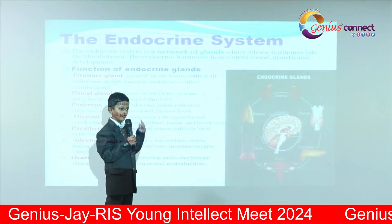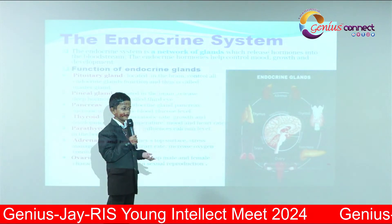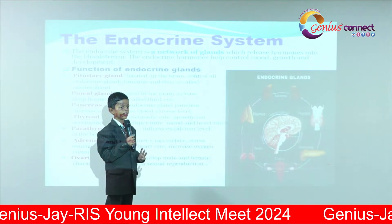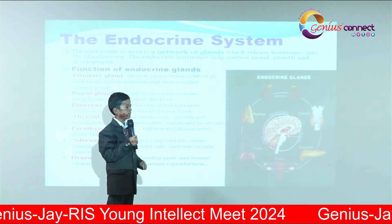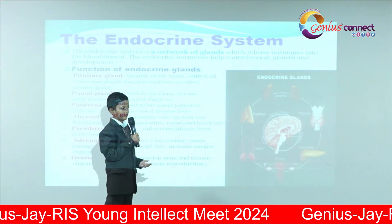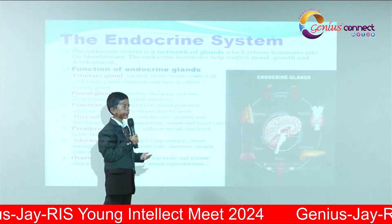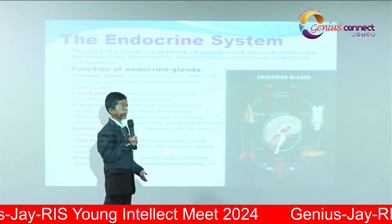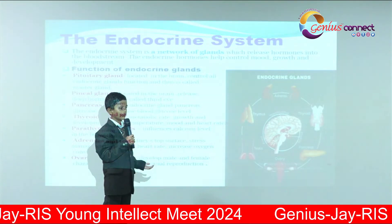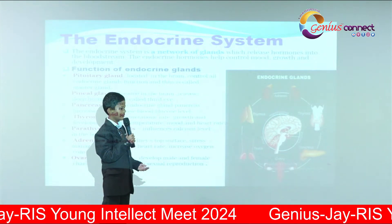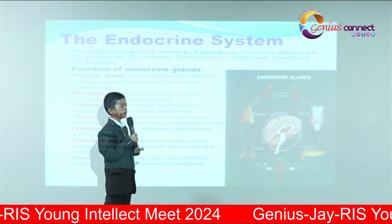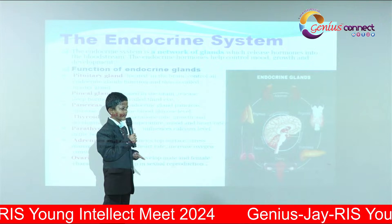The pineal gland is located in the brain and releases sleep hormones. The pancreas acts as an endocrine gland, increasing and decreasing blood glucose levels. The thyroid gland controls metabolic rate.